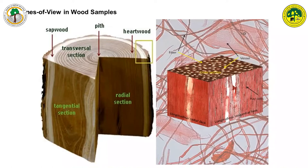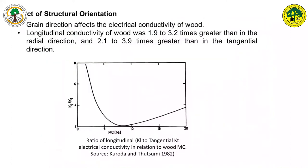In these two directions, because of their anatomical differences — the ray cells are basically like lines and they help in conduction to some extent — the electrical property changes. The longitudinal conductivity of wood is almost two to three times greater than in the radial directions. Among the two orthogonal directions perpendicular to longitudinal, that is radial and tangential, the values are higher for radial directions as compared to tangential directions.